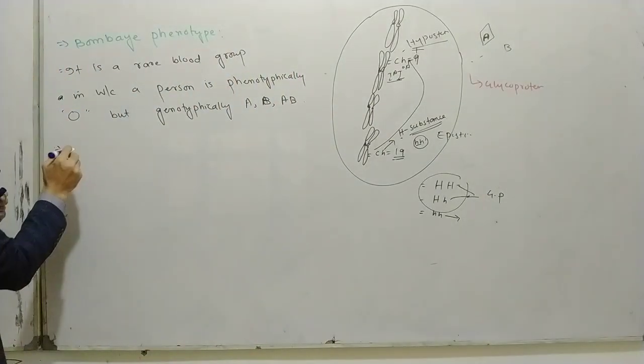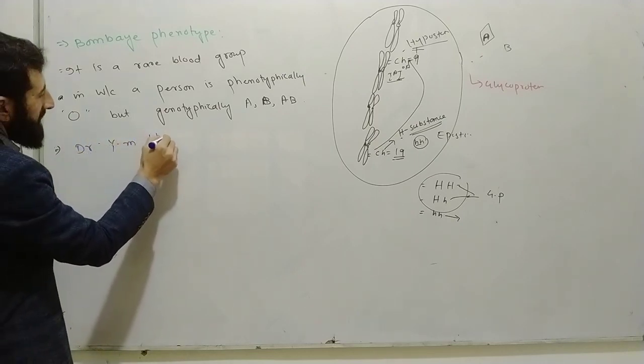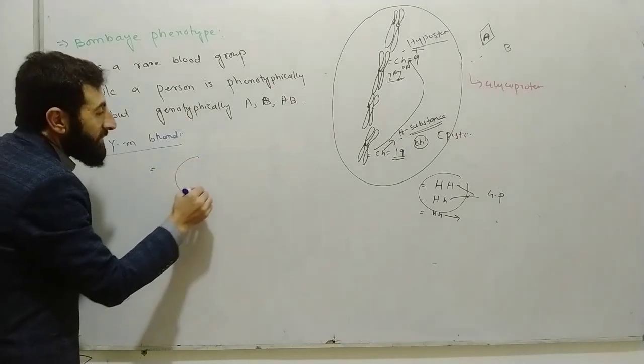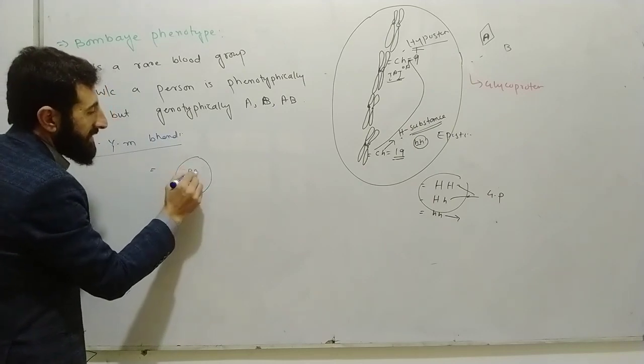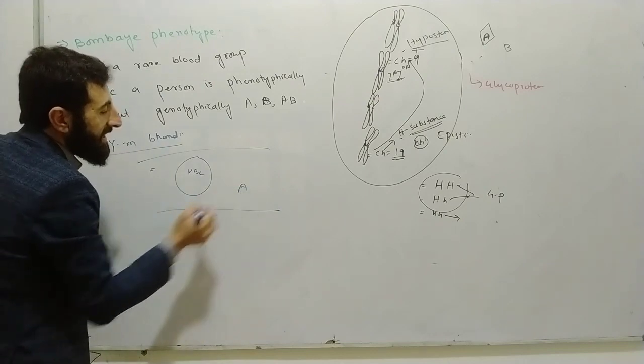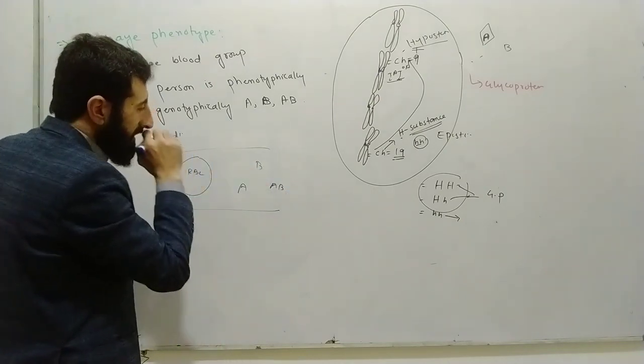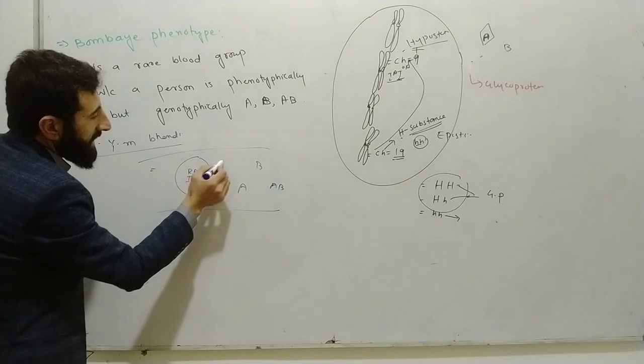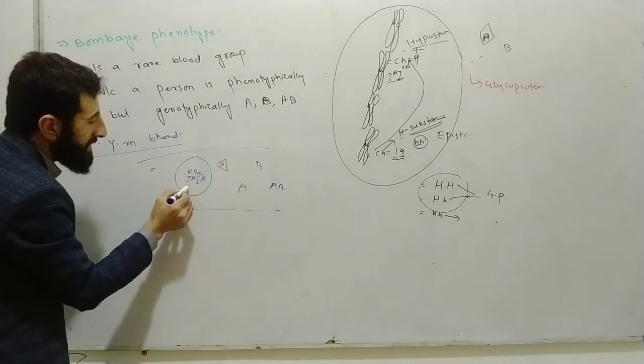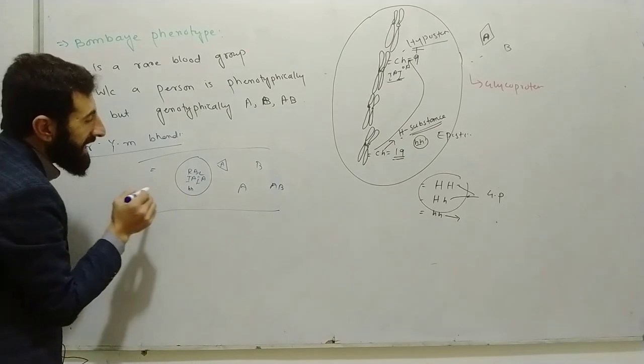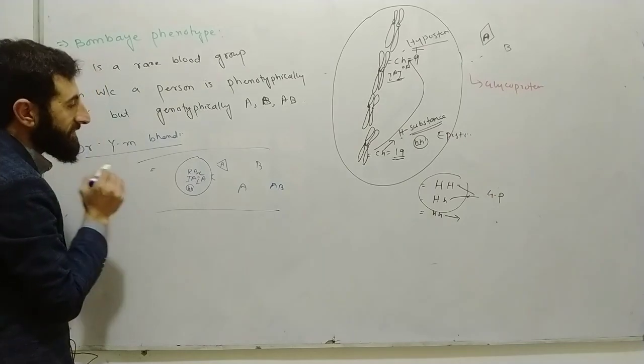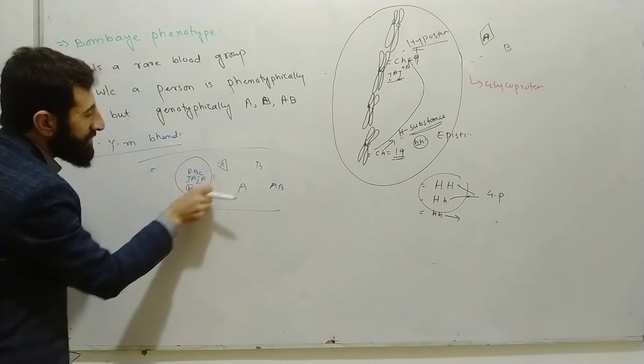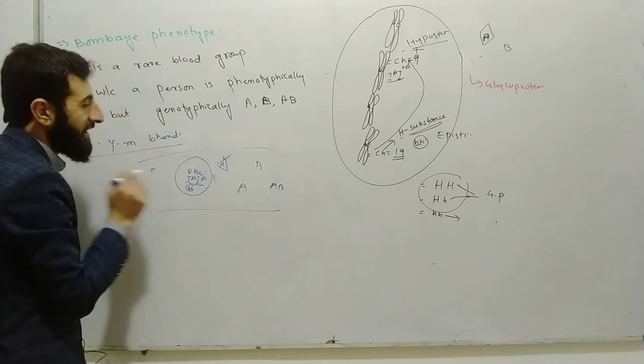So this person has a rare blood group where they test as blood group O, but their genotype shows A or AB. If the individual's RBC has IA IA for blood group A, but they also have small h small h, then the glycoprotein won't be produced. Without glycoprotein, the RBC has no binding site.